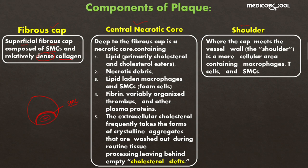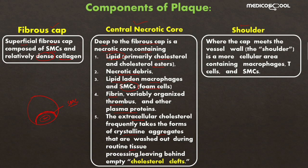Deep to the fibrous cap lies the central necrotic core. It contains lipids mainly in the form of cholesterol and cholesterol esters, necrotic debris, lipid-laden macrophages and smooth muscle cells in the form of foam cells, proteins in the form of fibrin, thrombus, and other plasma proteins. The extracellular cholesterol frequently forms crystalline aggregates that are washed out during routine tissue processing, leaving behind empty cholesterol clefts.